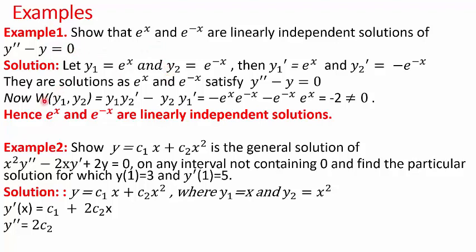Let's come to the Wronskian. As we have been asked to show that these solutions are linearly independent, the Wronskian W(y1, y2) comes out to be −2. This is non-zero, which tells us that my solutions e^x and e^(−x) are linearly independent. This is what was asked to show.